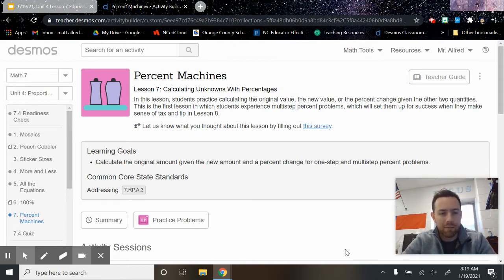We're about to talk about lesson seven from unit four called percent machines. This lesson is all about calculating unknown numbers with percentages.